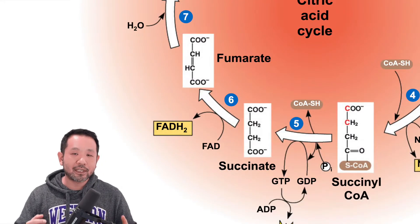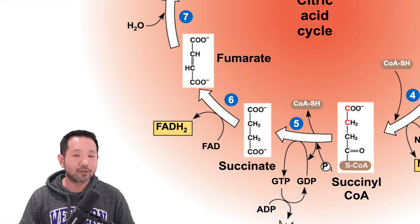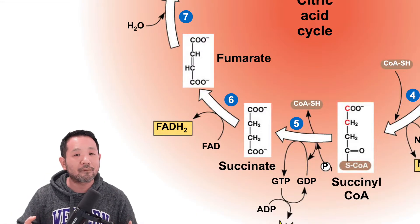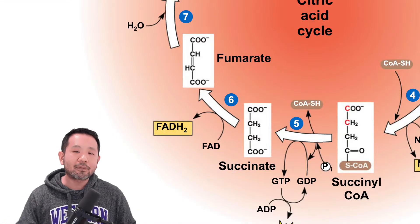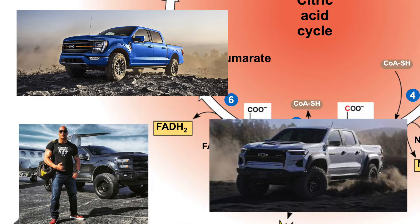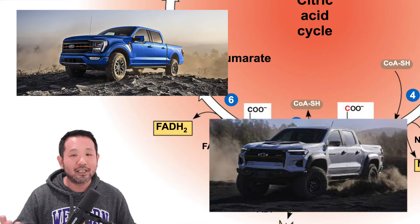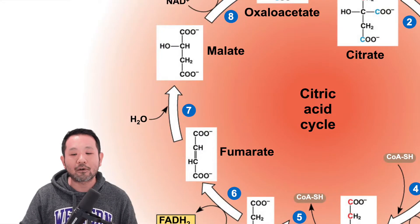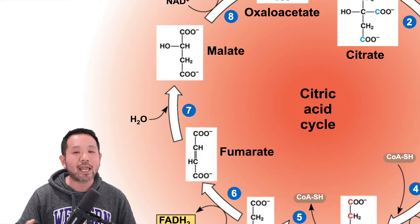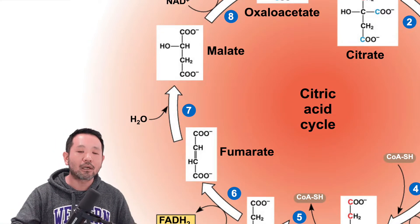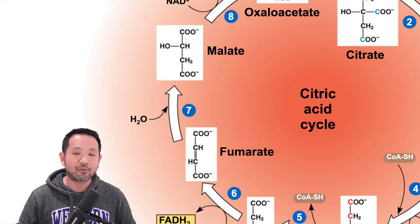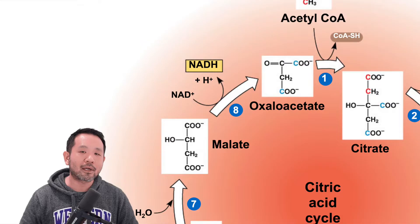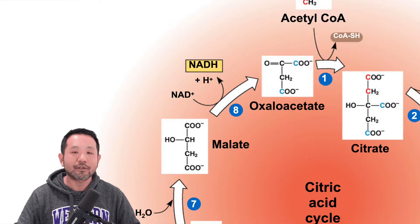From succinate, we form fumarate. Here we introduce another electron carrier called FAD. NAD+ is like a Ford F-150 and FAD is like a Chevy Colorado — they're both trucks performing generally the same function. Fumarate actually has a double bond, which is why we're able to release electrons — going from single bonds to double bonds allows more efficient release of electrons. Then water relieves those double bonds forming malate, which charges up another NAD+ forming oxaloacetate, which is what we began with, so the whole circle is complete.